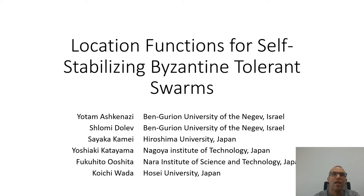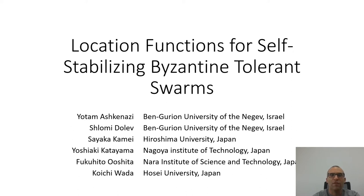Hello, I'm Atam Ashkenazi and I'm a PhD student in the Computer Science Department at Ben-Gurion University under the advisory of Professor Shlomi Dolev. I will present my collaborative project with Shlomi Dolev, Sayaka Kamai, Yushiaki Katayama, Fukuhito Oshita, and Kohei Iwada on location functions for self-stabilization Byzantine tolerance swarms. We demonstrate the usage of shape and polynomial error correcting in order to achieve self-stabilization despite the presence of Byzantine robots.